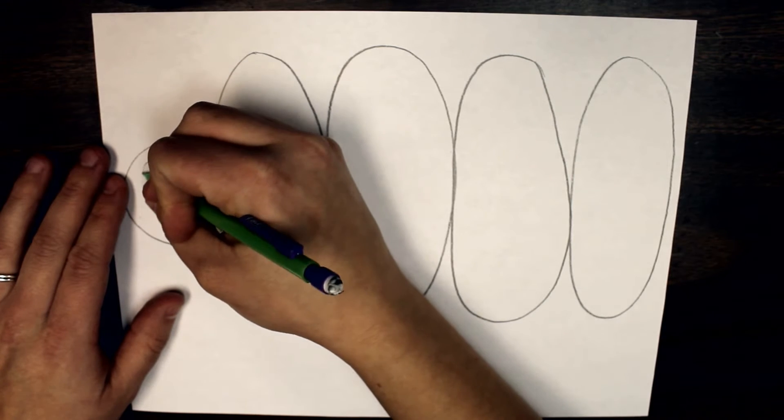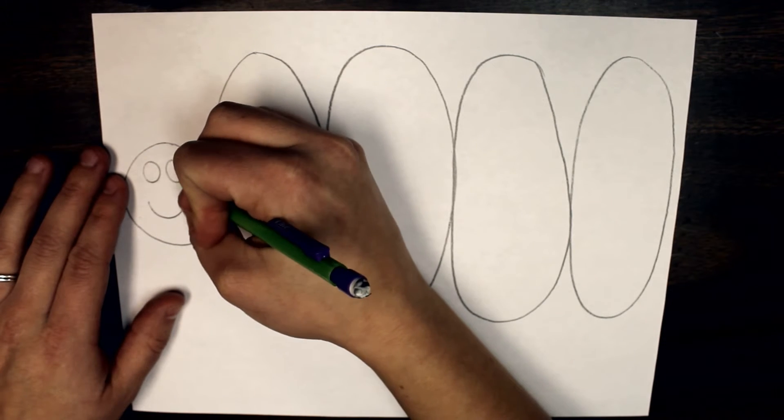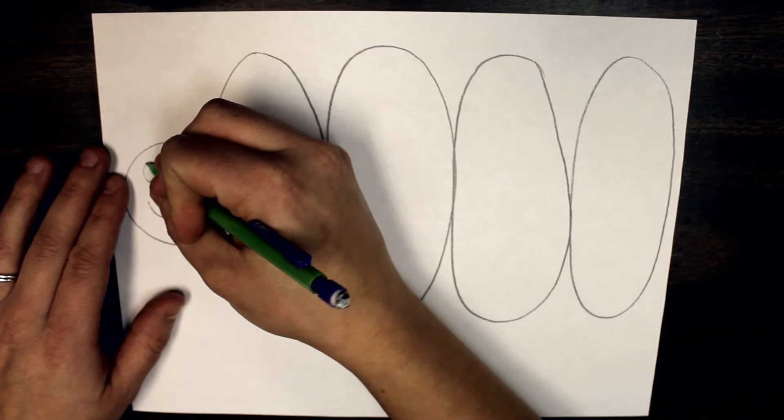Then give your caterpillar a face and if you want to you can also add some antennas at the top of his head.